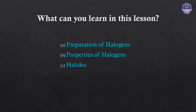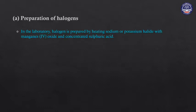This is the preparation of halogens — halogen topics, physical and chemical properties of halogens. Preparation of halogens involves: potassium, halogens, manganese, sulfuric acid, and sulfuric acid.